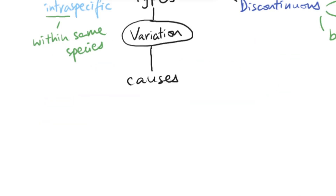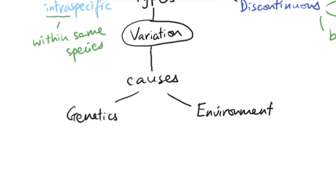Next, we're going to look at two specific causes of different types of variation. Most variation we see between different organisms is mostly based on two particular things: genetics and environment. Sometimes certain variation could be caused only by one of these, but in certain situations it could be a mixture of both. An example of variation caused only by genetics would be genetic disorders like cystic fibrosis, having different blood types, or your eye colour, which is determined only by genetics.